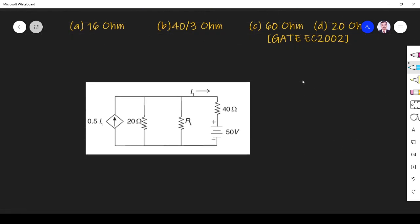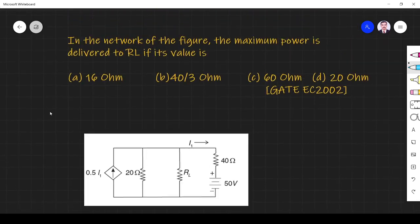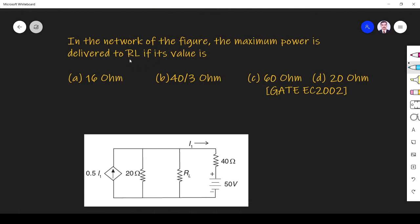Okay, so this is what they have given. We have to find when maximum power is delivered to the load. This load is RL. So here you see we have a dependent source. Whenever we have a dependent source, we have some different procedure.